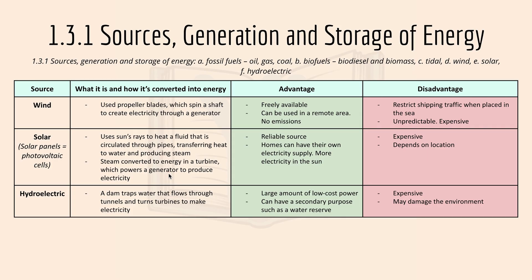Solar energy uses the sun's rays to heat a fluid, which circulates through pipes transferring heat to water, producing steam. The steam converts energy in a turbine which powers a generator to produce electricity. The advantage is that it's a reliable source and most homes can have their own electrical supply. The disadvantage is that it's expensive and depends on location — in areas with little sunlight like polar regions, solar power is difficult to use. Hydroelectric energy uses a dam to trap water that flows through tunnels and turns turbines. The advantage is large amounts of low-cost power and a secondary purpose such as a water reserve. The disadvantage is that it's expensive and may damage the environment.